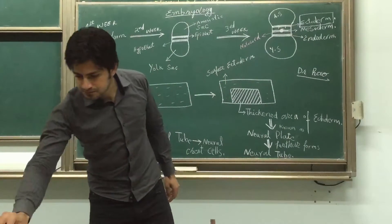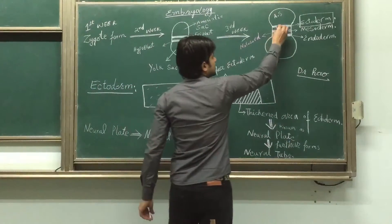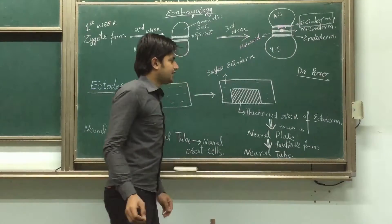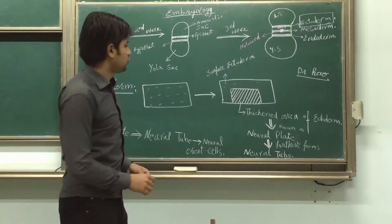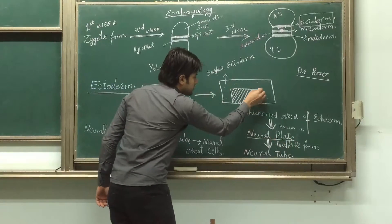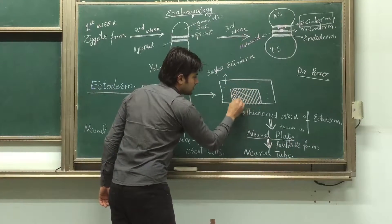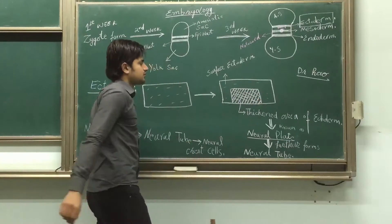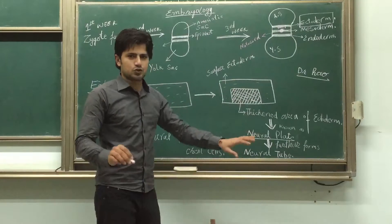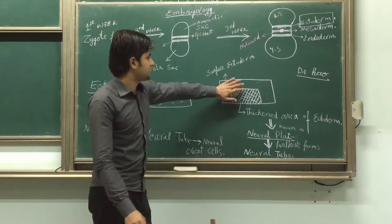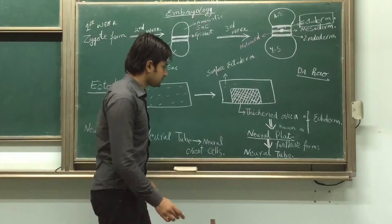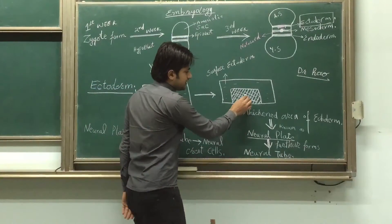This thickened part of the ectoderm is known as the neural plate. The remaining part, for today just for understanding, is known as surface ectoderm.